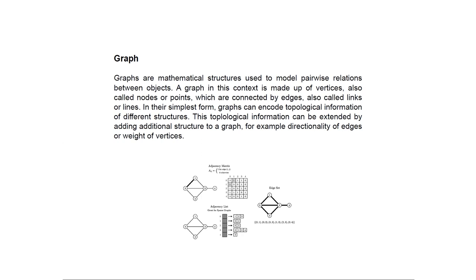We have objects and these objects have certain relationships to each other. This relationship is termed adjacency. The objects — we call them vertices or nodes in a graph — some of them are related to each other, and we show this relation by drawing a line between two vertices. That line is a connection, a link, or also called an edge.